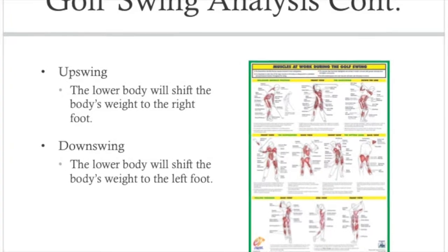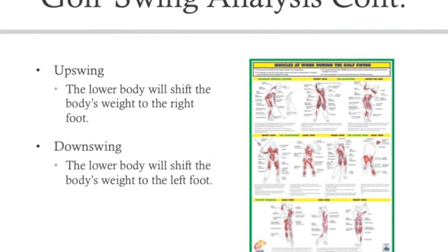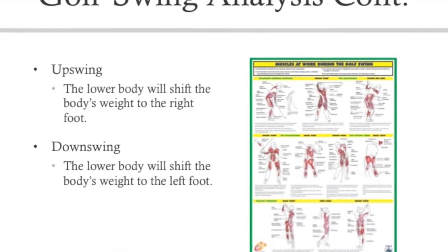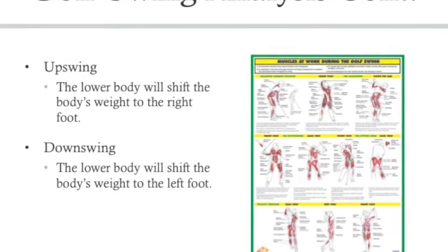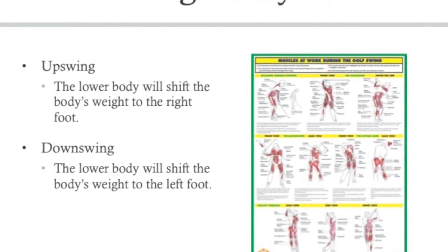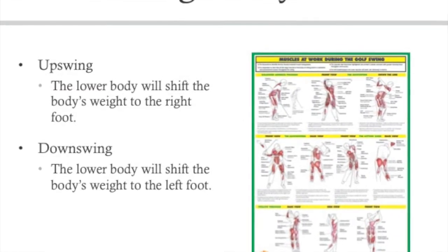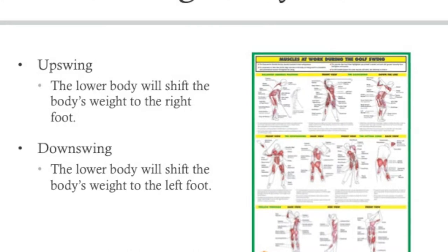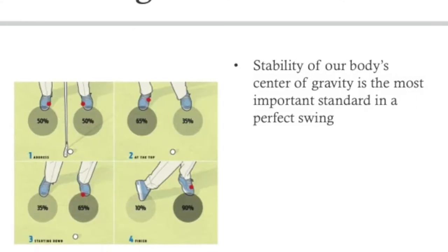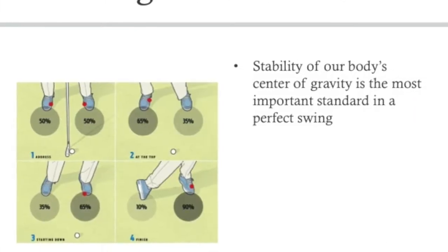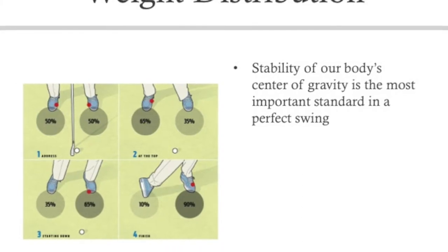In our upswing, the lower body will shift the body's weight to the right foot, and then in our downswing and follow-through, the lower body will shift the body's weight to the left foot — and vice versa if you are left-handed. In regards to weight distribution, stability and balance are the most important standards in a perfect swing.